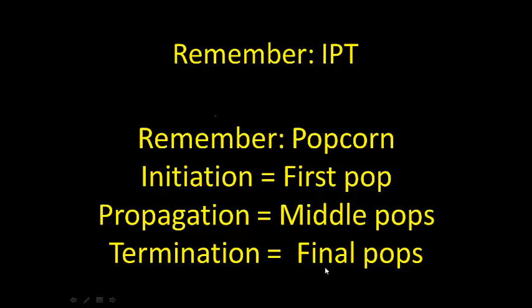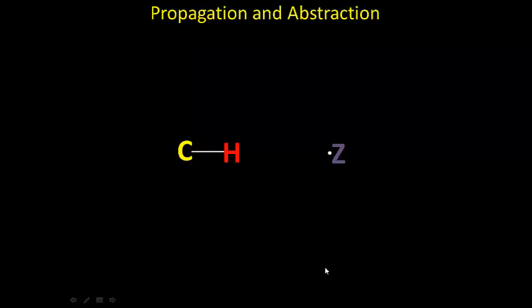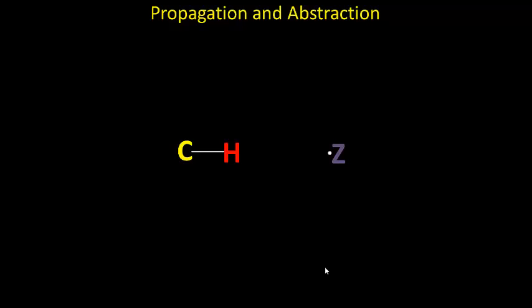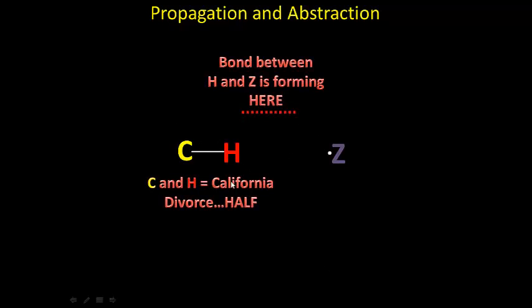What happens in propagation is what we call abstraction. Let's look at the mechanism. Here, these arrows indicate that I'm homolytically breaking the bond between carbon and hydrogen. That means carbon is taking one electron, hydrogen is taking one electron.